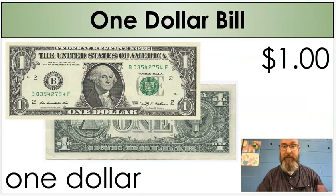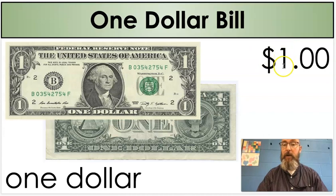Our first one is, that's the one most of us always know, it is our one dollar bill. It's worth one dollar, and this is how we write it: with a dollar sign, a one, a decimal point, and two zeros, and that would be our cents right there.